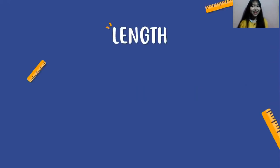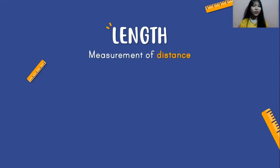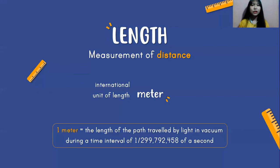Now we're going to cover the first quantity we'll learn today: length. Basically, length is a measurement of distance, and the international unit of length is meter. As we know, meter is not the only unit we can use to measure length. We have several units to make it easier when mentioning very big or very small length measurements.